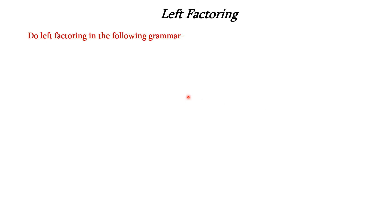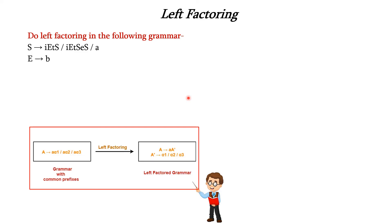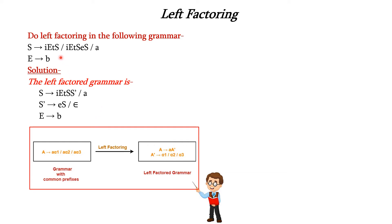Let us use this to solve a problem. Here we have two productions. In the first production, we have the common prefix IETS, which is common to two of the productions. So we create one new production for this common prefix alone: S → IETS S'. We introduce the new variable S', and the remaining production 'a' is written as it is.